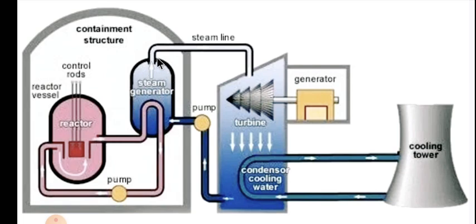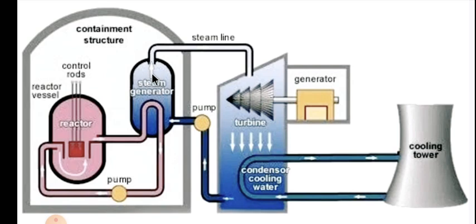The steam generator is essentially the boiler. The hot coolant flows into the boiler and transfers its heat to water. As you can see, the boiler contains water, and the water absorbs the heat from the hot coolant and gets converted into superheated steam.